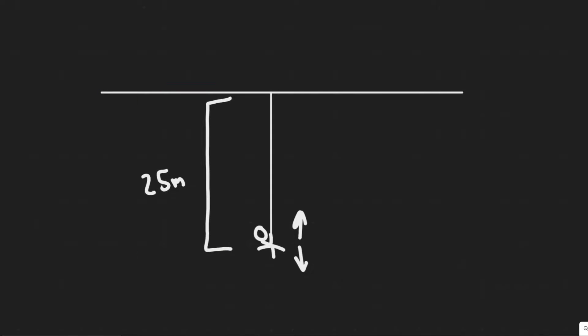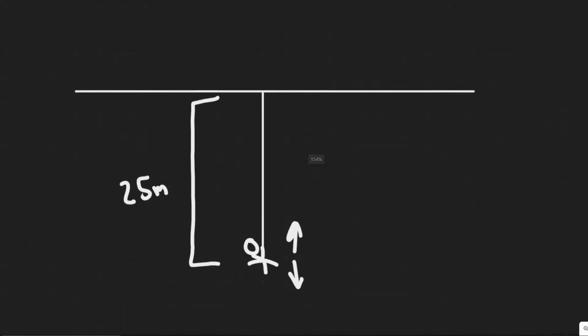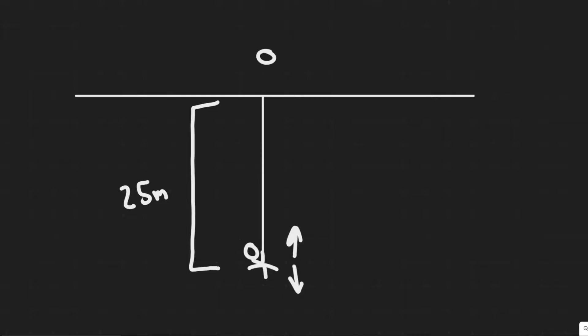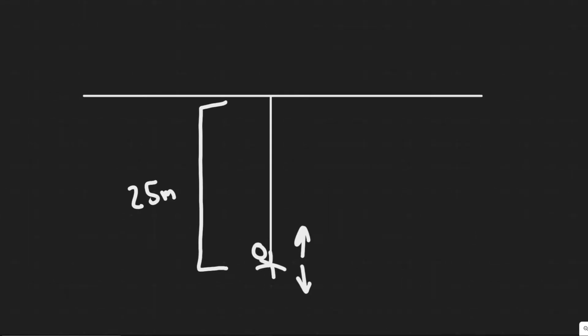The first thing you should always do in a physics problem is draw what's going on. We want to imagine our bungee jumper was up here and he's going to jump down. At some point, he's going to go up, down, and oscillate. We know he oscillates 8 times in 43 seconds. After he's done oscillating, he's going to come to rest and we know that's 25 meters below the level of the bridge. So this would be our bridge here.